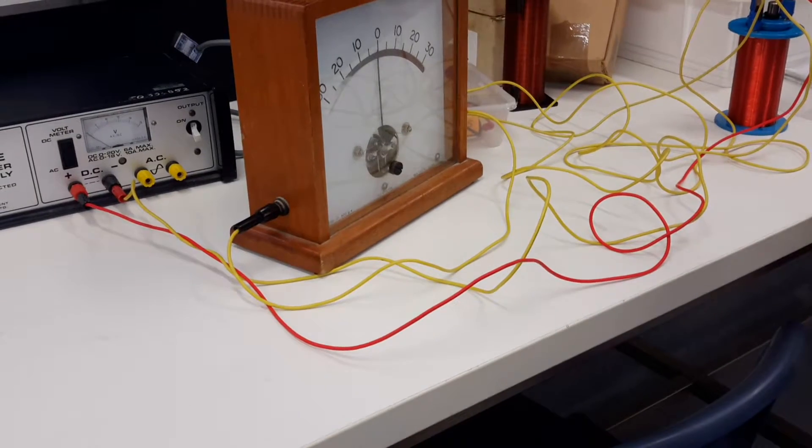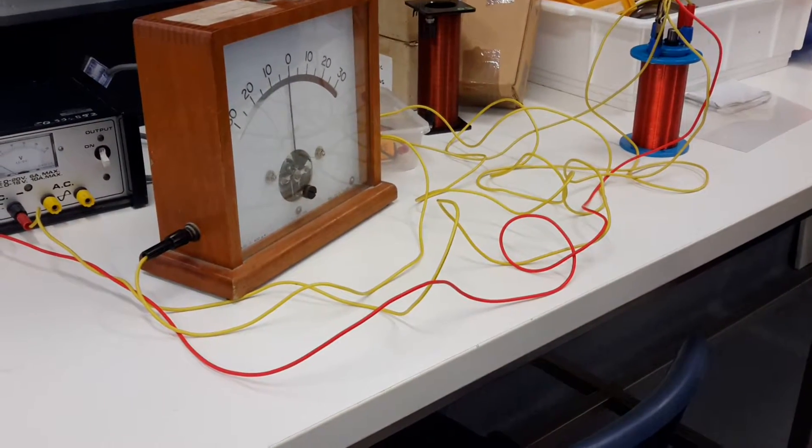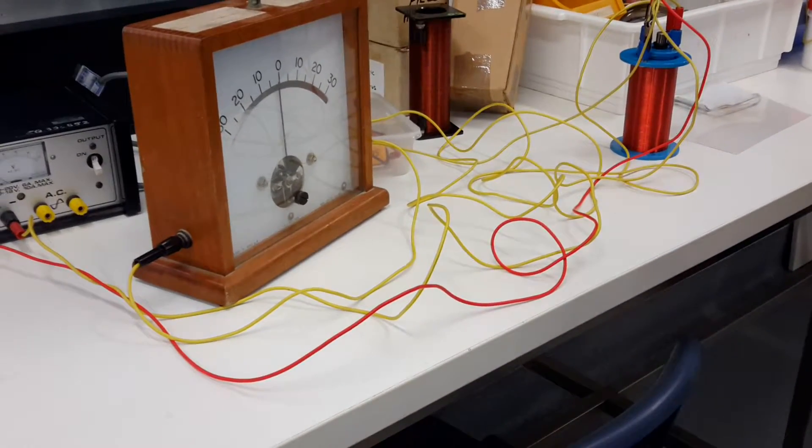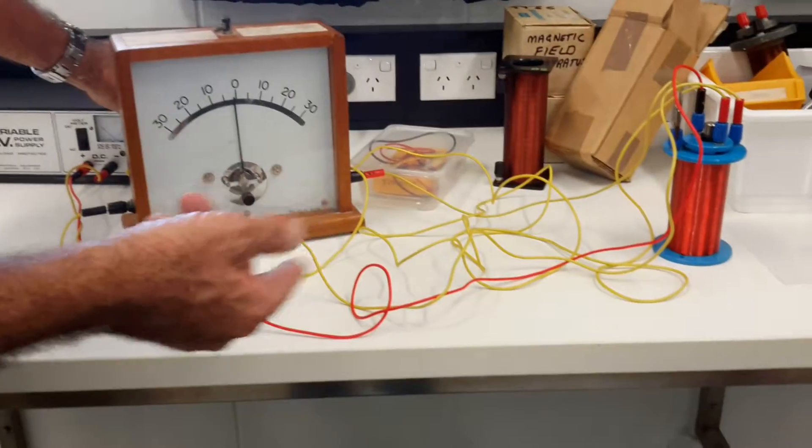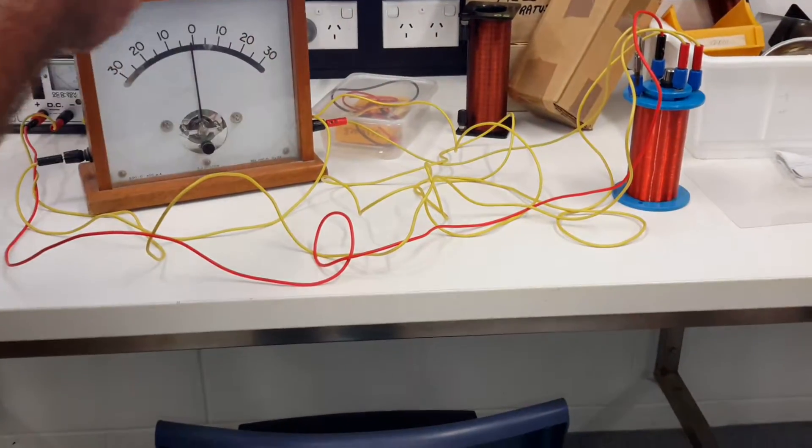So we have a making and breaking magnetic field. Consequently, we have a making and breaking induced EMF. We switch it on, so we've got an increasing magnetic field. We have a change of flux, we have an induced current.